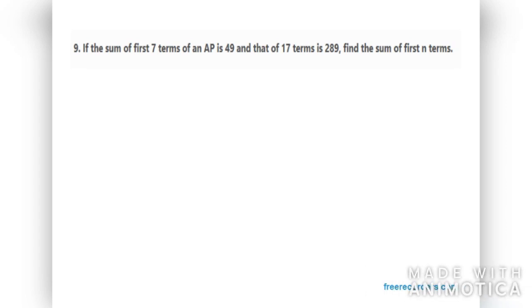Let's start with question number 9. If sum of first 7 terms of an AP is 49, that means in this case S7 is 49, and 17 terms is 289, that means S17 is 289. So we need to find SN in this case because it says sum of first N terms.